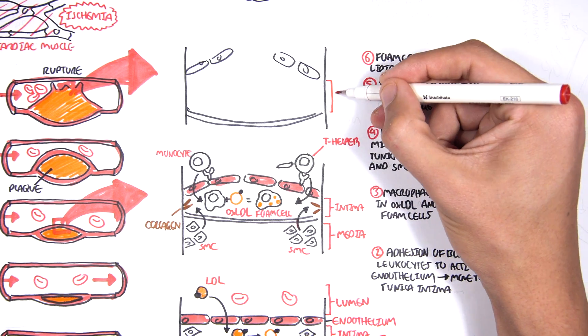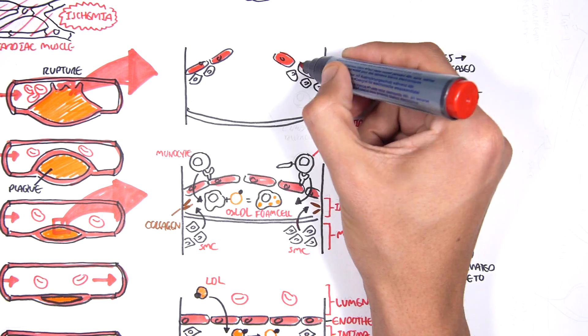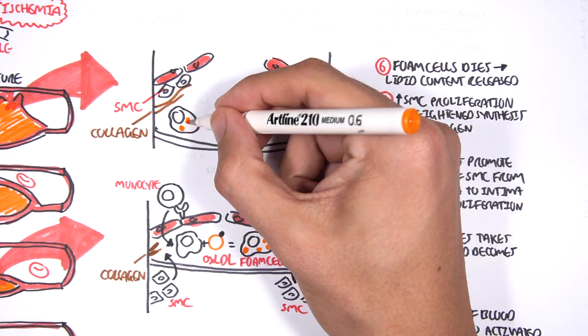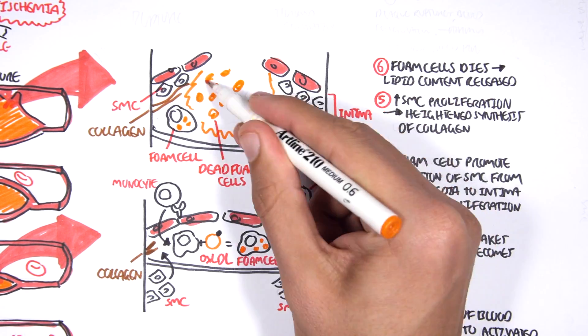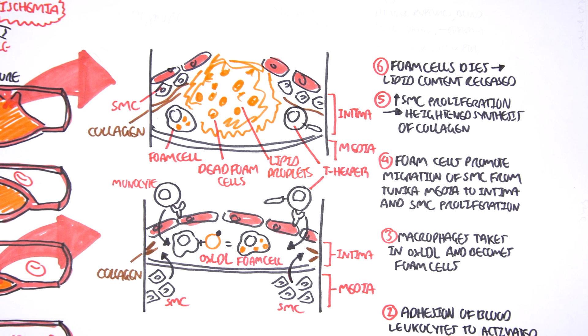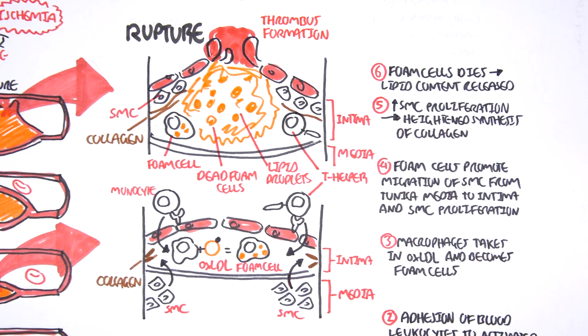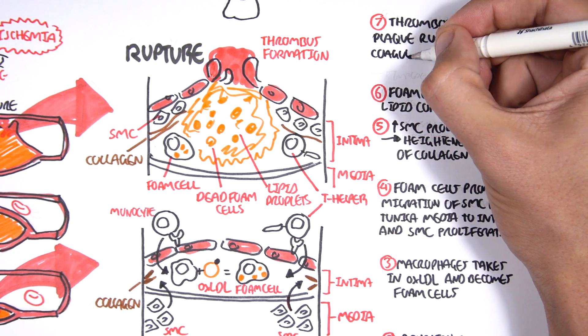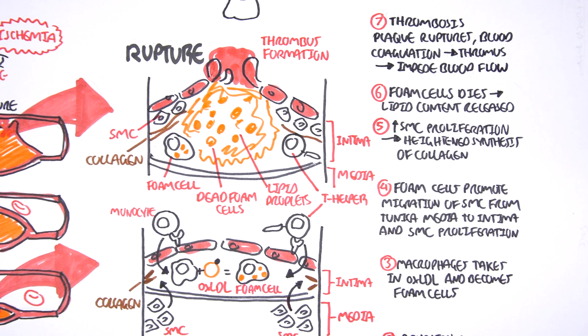So here again, we have the tunica intima and tunica media of the blood vessel. Here are the smooth muscle cells which have accumulated in the tunica intima layer, as well as collagen. Foam cells are here and they die together with other cells in the area. So here we have dead foam cells with lipid content spilt out. The growth of the plaque is this area here. Now, the plaque can then rupture, which can lead to thrombosis. Thrombosis is when the plaque ruptures and where coagulation happens to stop the plaque from spilling its content into the lumen. This forms a thrombus, a clot, which can impede blood flow and cause serious complications.